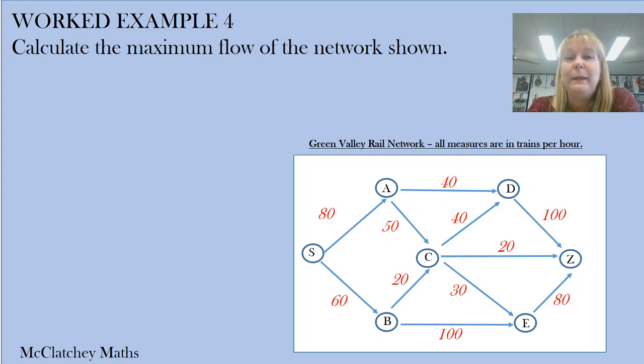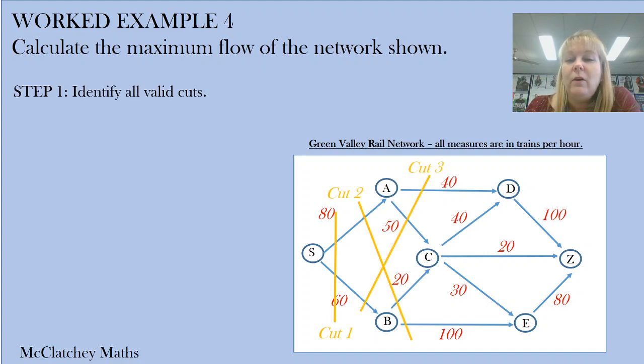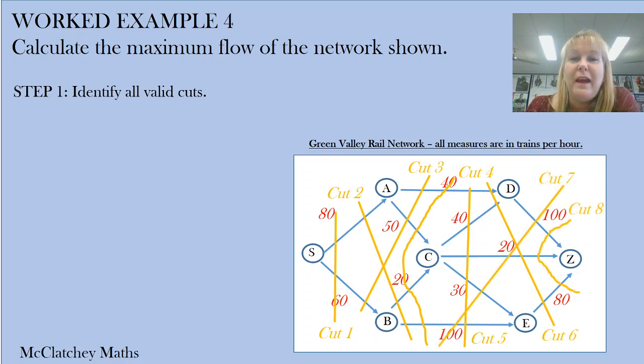Let's look at a slightly more complicated example, example four of a rail network that needs to be cut. We need to find the maximum flow. First, let's identify all of those valid cuts - there's going to be lots of these. They're going in all different directions. Notice I've started to draw some squiggly lines to show some of the ones that can't be drawn as straight lines, because sometimes you won't be able to use a ruler. Be prepared for a little bit of mess. We've got eight cuts to analyze. You may find more.